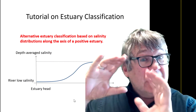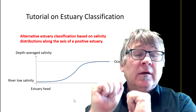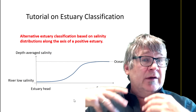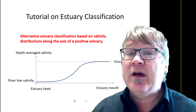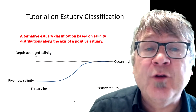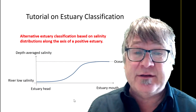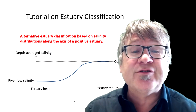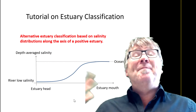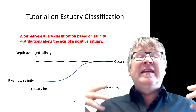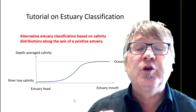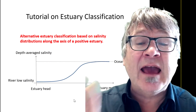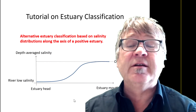Here is another classification. It's the same type of estuaries we are talking about, but it's another method to classify estuaries. It's based on the salinity distributions along the axis of a positive estuary.